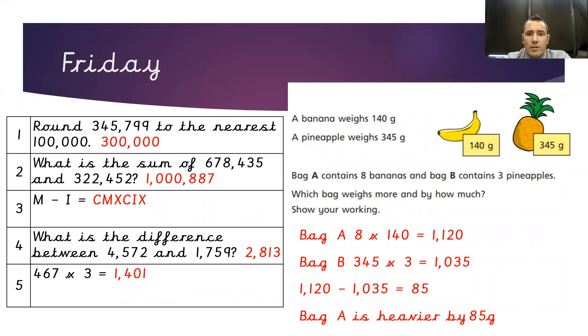So to work out the weights of the two bags, we'd need to do 8 times 140, which will give us 1,120 grams or 1.12 kilograms.